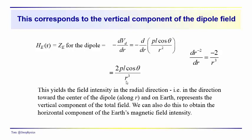Something to keep in mind when comparing field intensity: thinking of the analogy between magnetic field intensity and acceleration due to gravity — the acceleration due to gravity varies as R squared, but the magnetic field intensity of the dipole varies as R cubed. So it's dropping off a lot more quickly; the dipole field drops off much more quickly than the monopole field.